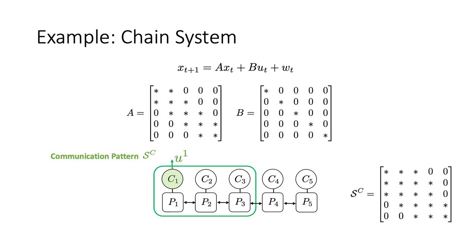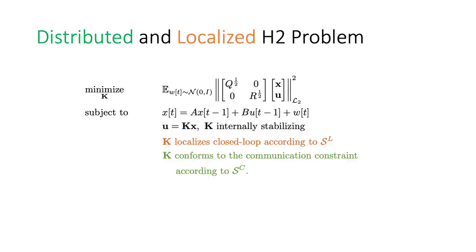S_L is a design choice based on the topology of the dynamics. Here, we can choose S_L to have the same sparsity pattern as A matrix. This means disturbances happening at agent 5 does not have any effect on agent 1 through agent 3. For local decision-making, we can similarly prescribe a sparsity pattern for computing local control actions. For example, we can allow the first agent to compute its control actions based on the states and control actions of its two-hop propagation neighbors, which in this case is agent 1 through 3. Together, we can formally introduce the distributed and localized H2 problem.